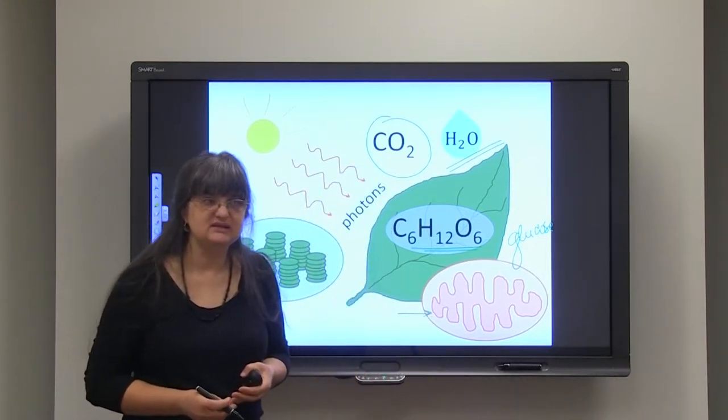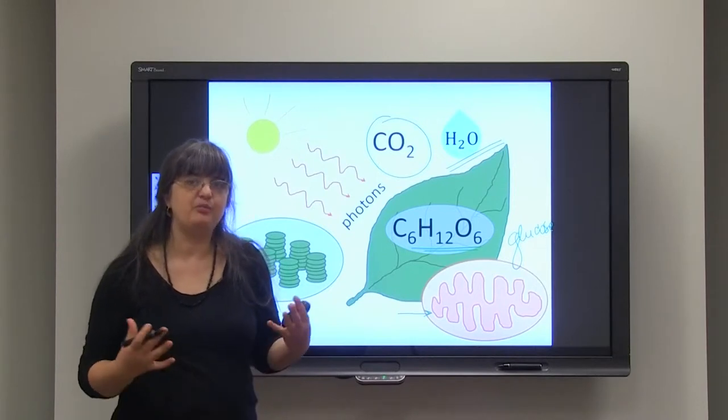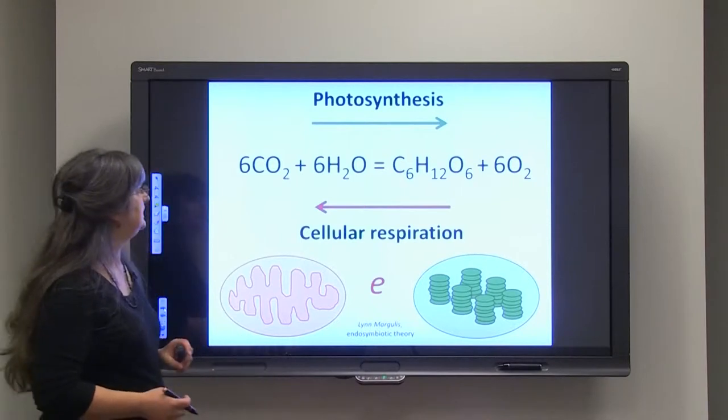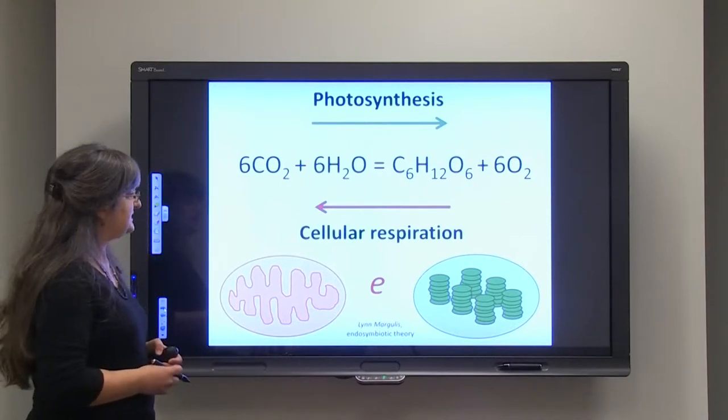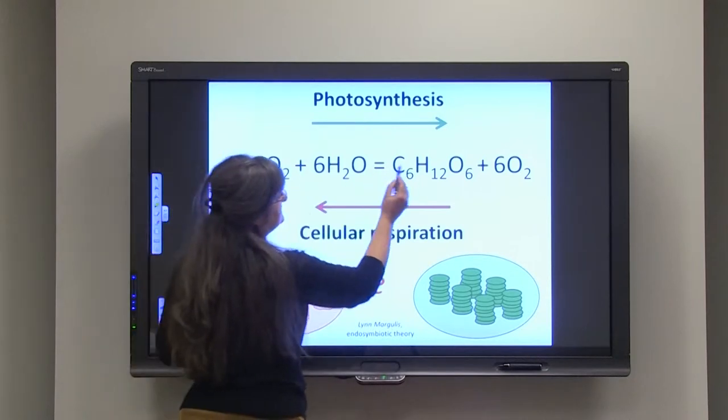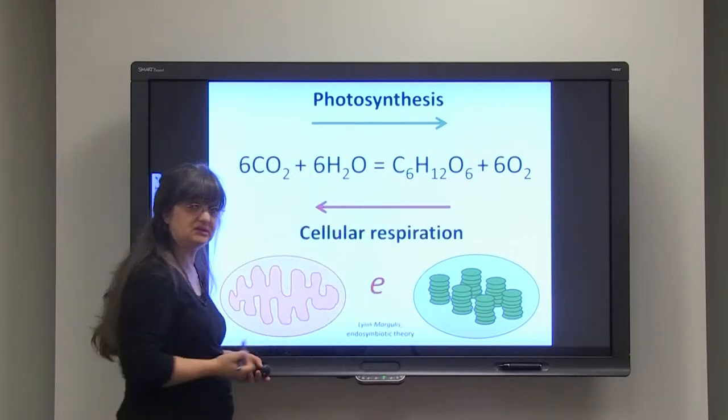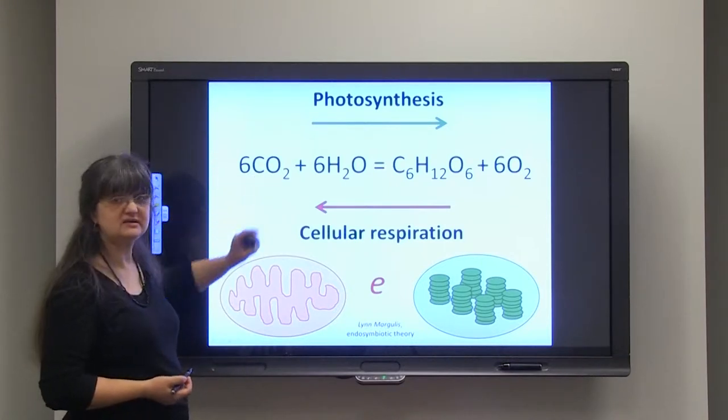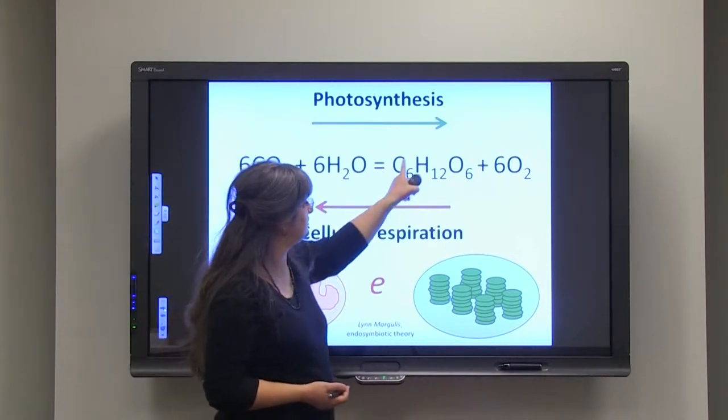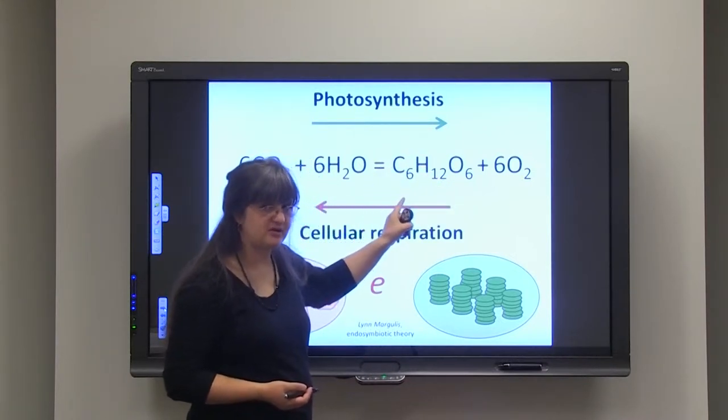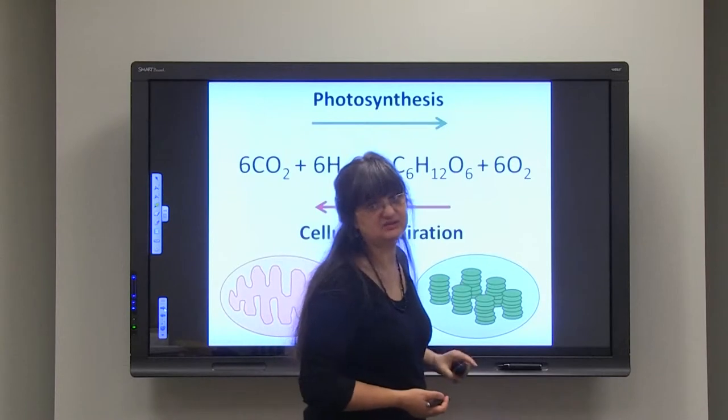Mitochondria are organelles that we can think about that they are our power plants. Now, photosynthesis and cellular respiration are processes that are opposite to each other. So, during the photosynthesis, plants are utilizing carbon dioxide and water in order to form glucose. And as the byproduct, oxygen is released.